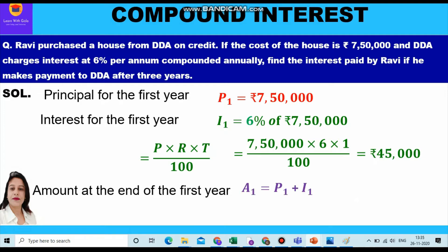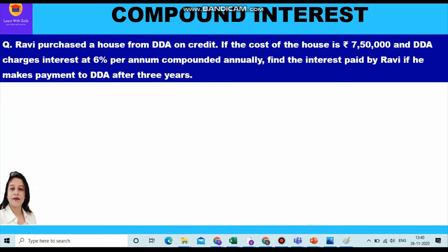Now we shall calculate the amount at the end of the first year. The amount is the sum of the principal of the first year and the interest of the first year. So we add seven lakh fifty thousand plus forty five thousand and we get seven lakh ninety five thousand as the amount at the end of the first year.